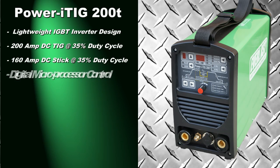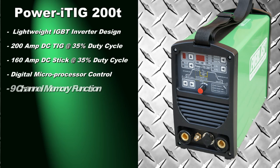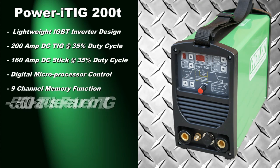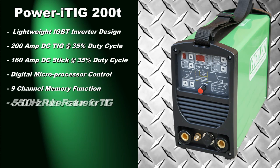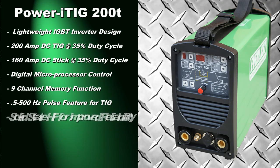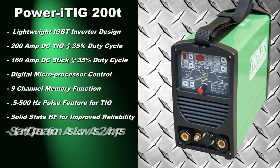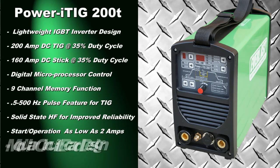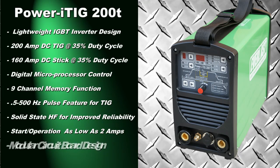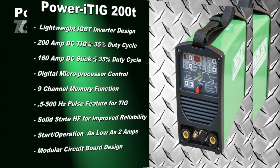It uses a digital microprocessor to intelligently manage most welder functions. A 9-channel memory allows you to store your favorite settings in TIG or stick modes. Pulse frequency ranges from 0.5 to 500 Hz. The start reliability has been improved with the all-new solid-state high-frequency design. The unit allows operation down to 2 amps and features a modular circuit design for easy servicing.